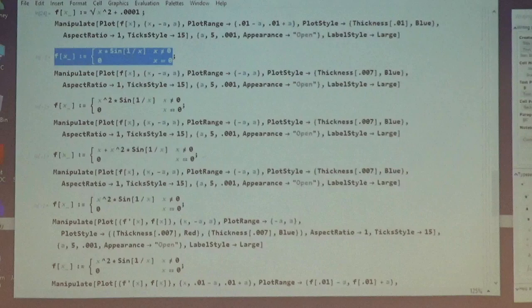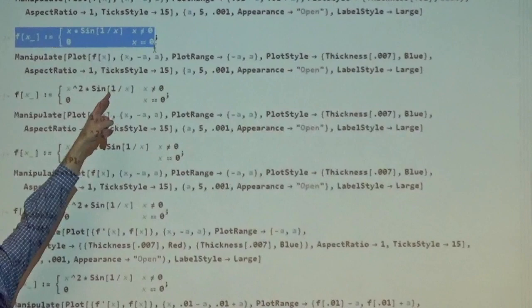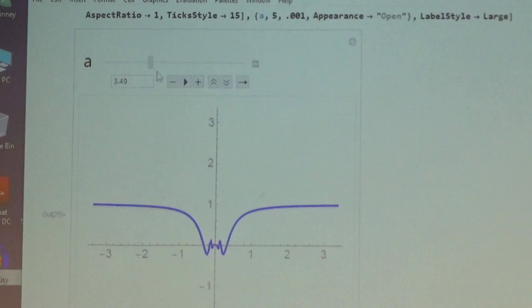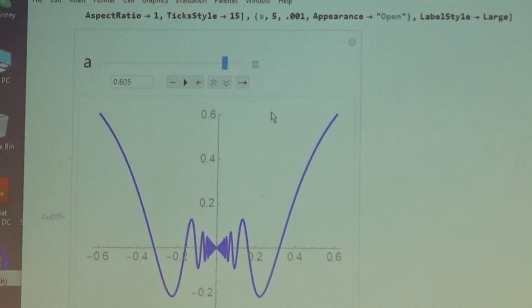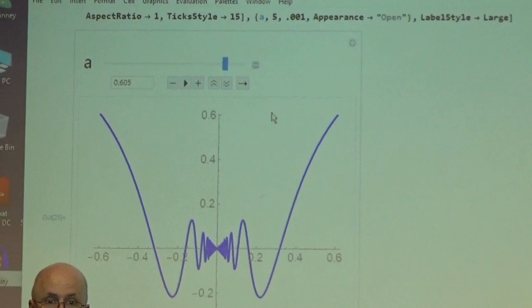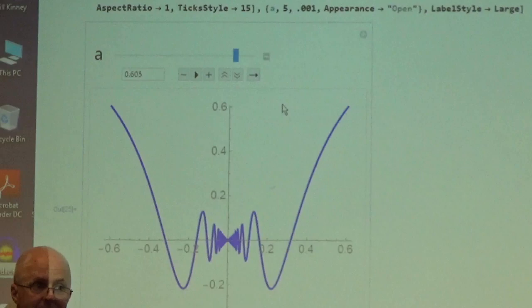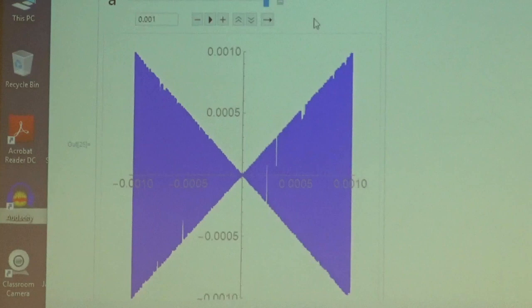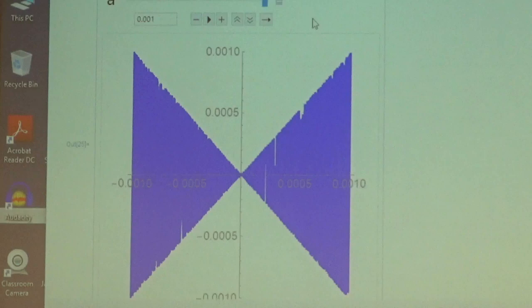What about this one? F of x equals x times sine of 1 over x when x is not 0 and 0 otherwise. I think this may have been one of your homework problems as well. Zoom in on this one. What do you see? You see a pretty wild graph here. There's infinitely many oscillations. Remember the sine of 1 over x function had infinitely many oscillations with the same amplitude. Here the amplitudes are getting smaller because you're multiplying by x. But if you zoom in further and further toward the origin, it never looks more and more like a straight line. It always looks crazy. So that's not differentiable.